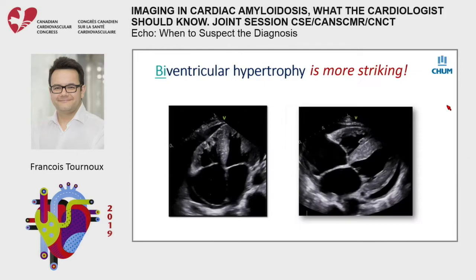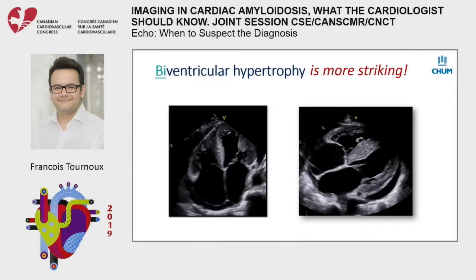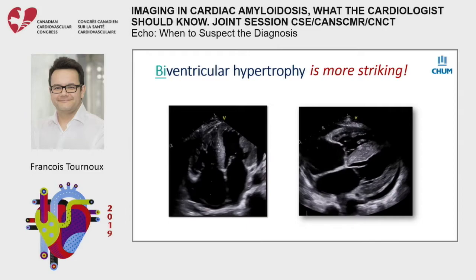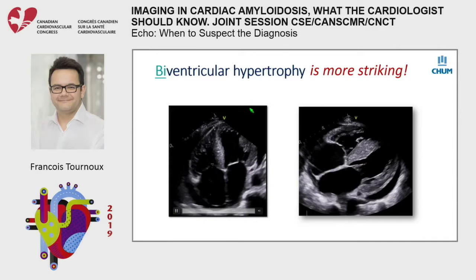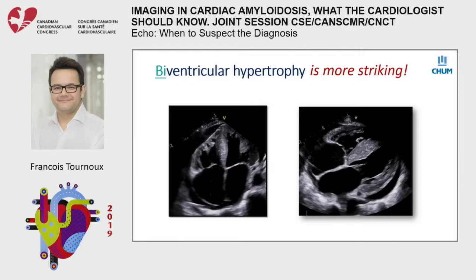Biventricular hypertrophy is much more striking. Usually when we read our echo, we talk about right ventricular dilatation and function, but we often forget to report how thick the right ventricular wall is. There are not so many diseases that give you biventricular hypertrophy, so this is a key point when you try to suspect the diagnosis.